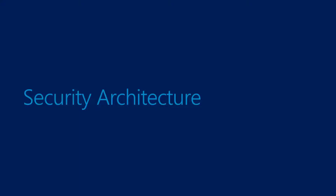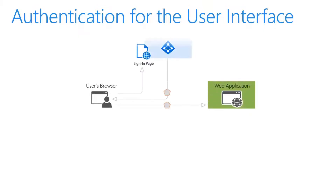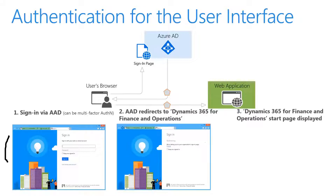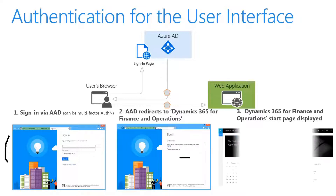Let's begin by reviewing the security architecture for Microsoft Dynamics 365 for Finance and Operations. Let's take a look at authentication for the user interface. First, you need to sign in via your Azure Active Directory account. Here we can see the sign-in page for that. Once you sign in, Azure Active Directory will redirect you to Dynamics 365 for Finance and Operations.